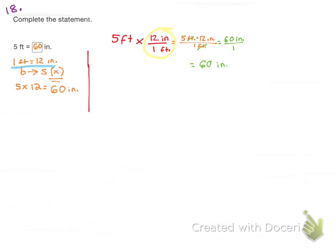So I've got my conversion factor written down. I see that a foot is bigger than an inch, so I'm going from big to small, which tells me that I multiply. And then I take 5 and I multiply it times 12, and I end up with 60 inches.